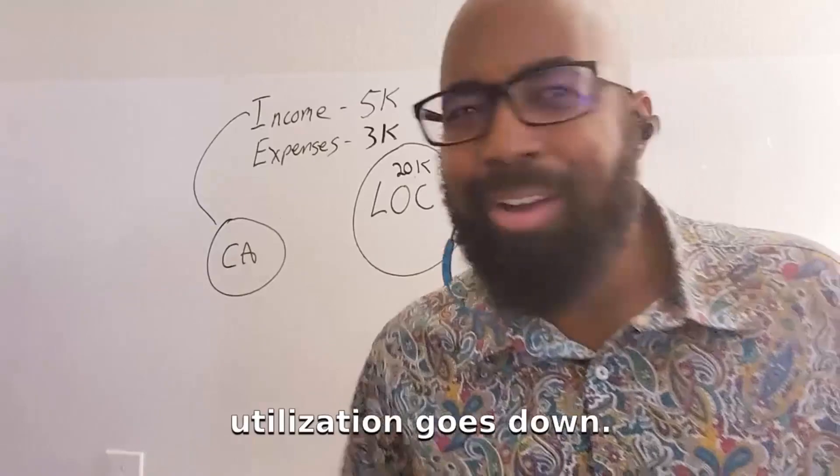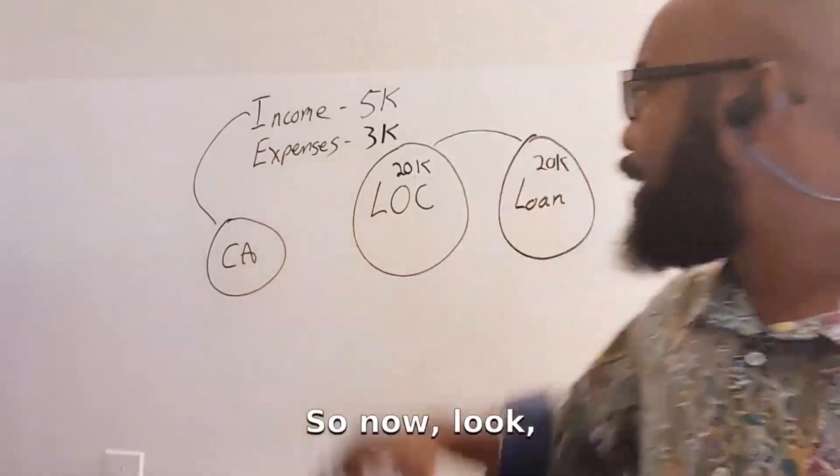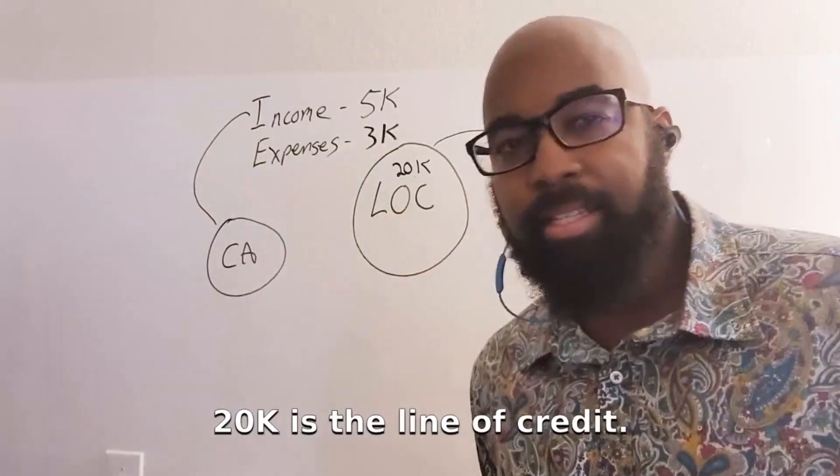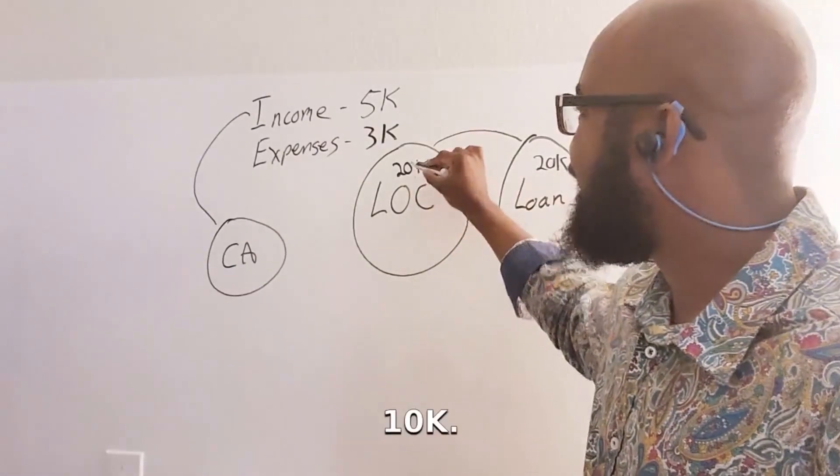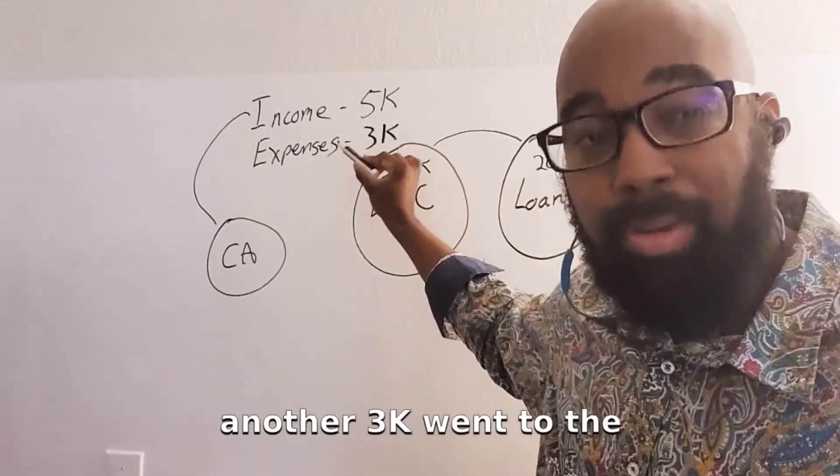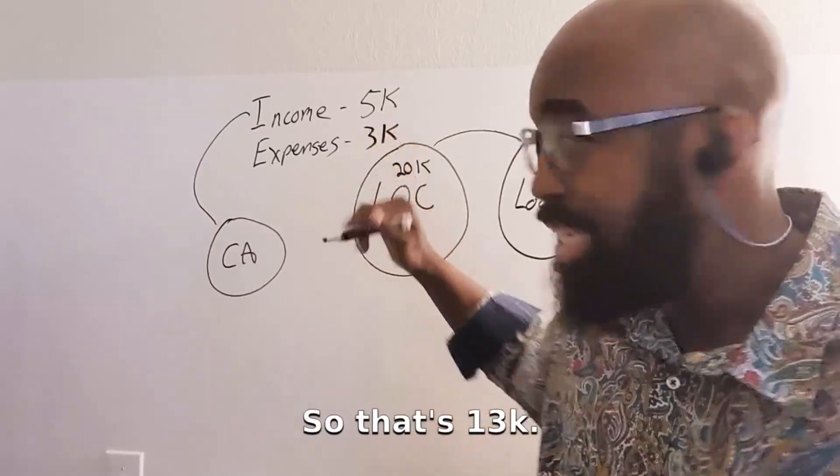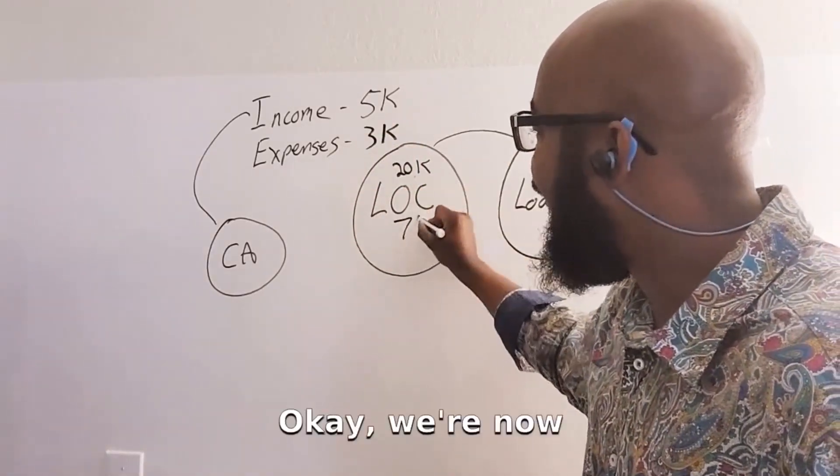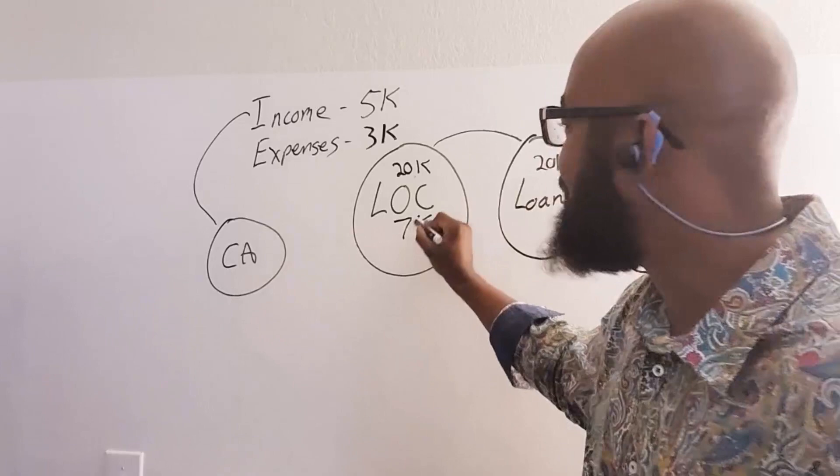Your credit utilization goes down. You're amazing. All right. So now look, 20K is the line of credit. Now, of course, 10K went there. Of course, 3K, another 3K went to the expenses. So that's 13K. That's okay. We're now at 7K.